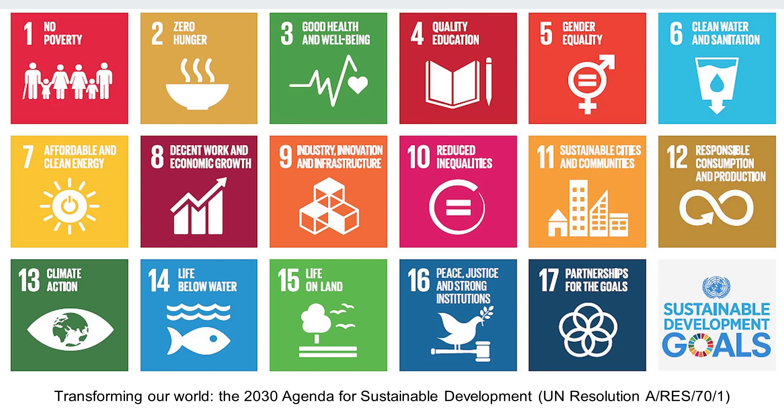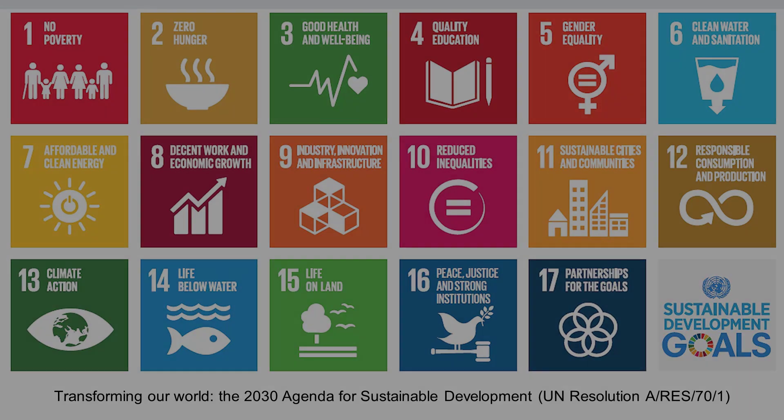In 2015, the United Nations established 17 Sustainable Development Goals targeting sustainable economic growth and social development by the year 2030. These SDGs cover five critical sustainability areas: people, planet, prosperity, peace, and partnership.